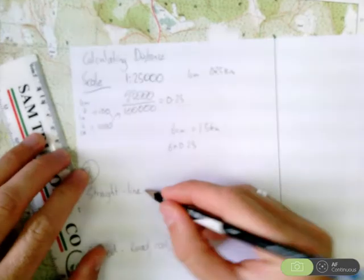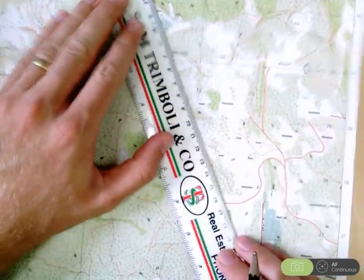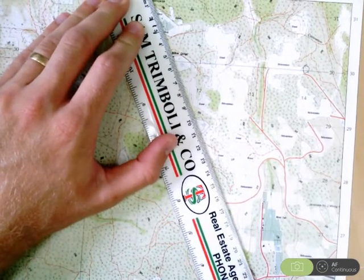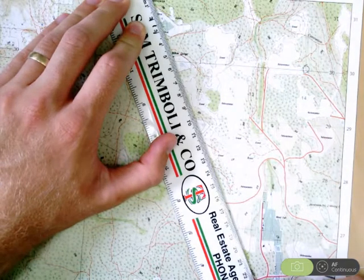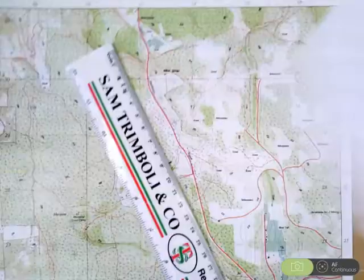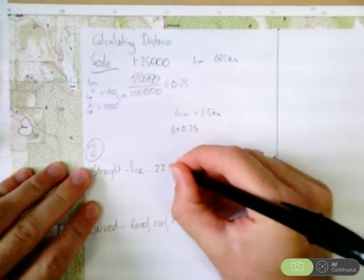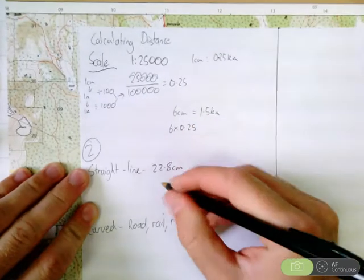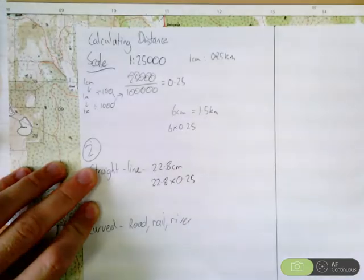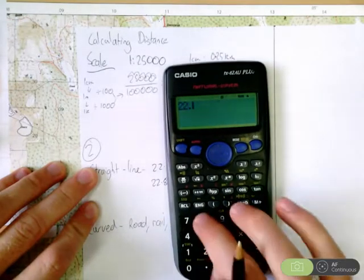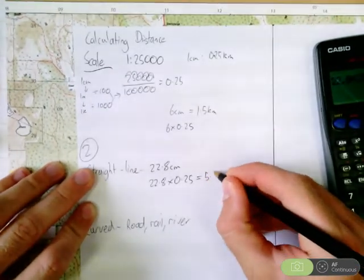First we'll calculate the straight line distance, say for example, if you're travelling in the air. So, first step, you measure the distance from one to the other, that would be 22.8 centimetres. Easy way to do this, 22.8 times 0.25 equals 5.7 kilometres.